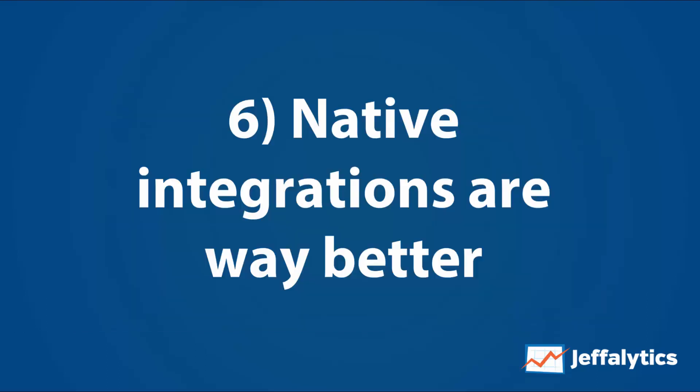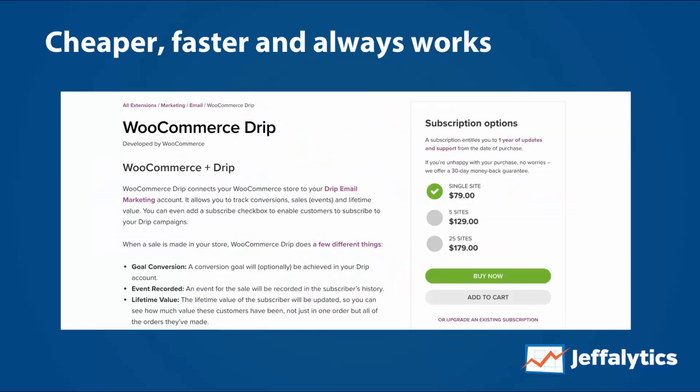Number six: native integrations are way better. It's always better to have a native integration between two platforms than to use something like Zapier — it's cheaper, faster, and it always works. For example, with WooCommerce and Drip, I don't even need to send my WooCommerce subscriptions into Drip through Zapier — it happens automatically through the native integration, much more foolproof.